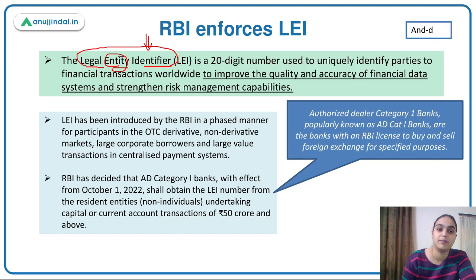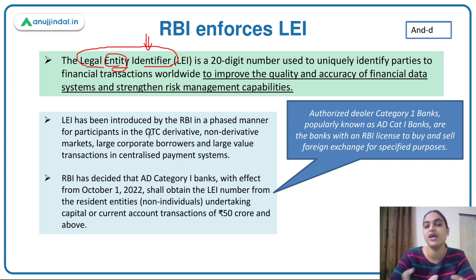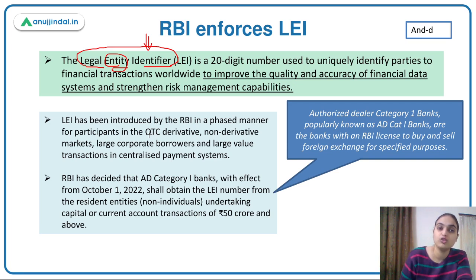RBI introduced LEI for various participants: those in over-the-counter derivative markets, non-derivative markets, large corporate borrowers, and those engaged in large value transactions. It was mandatory for these participants to mention this number in their large value transactions. Recently, RBI notified something new to better utilize the benefits of LEI — specifically targeting Authorized Dealer Category 1 banks.